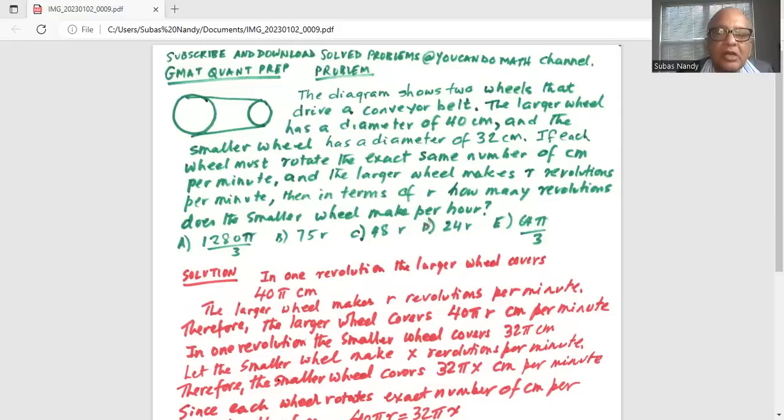In one revolution, the larger wheel covers 40 pi cm. Pi multiplied by diameter is the formula for the circumference, so it is 40 pi cm. The larger wheel makes r revolutions per minute. Therefore, the larger wheel covers 40 pi times r cm per minute.